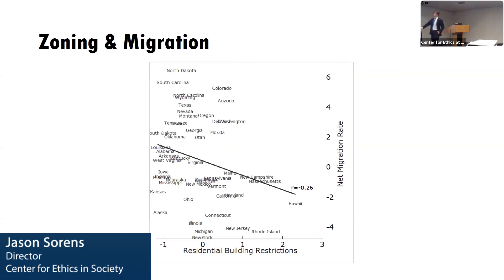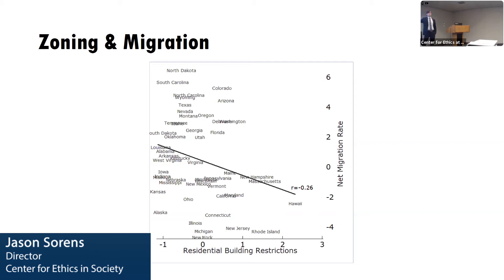Zoning and migration: the more residential building restrictions you have as a state, the lower is your net migration rate. In fact, the most restrictive states tend to have net out-migration — more people moving out of the state to other states than moving in. And this relationship is actually even stronger in causal terms than it appears here, because places that have a lot of in-migration also tend to be the ones that then start regulating more.